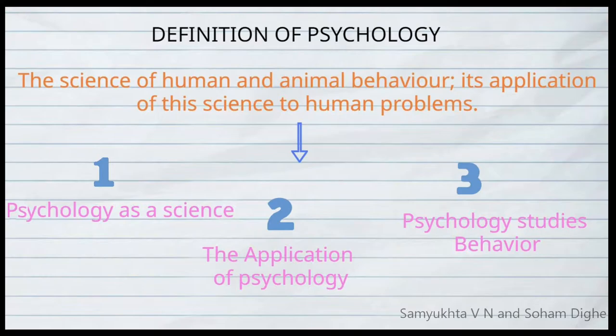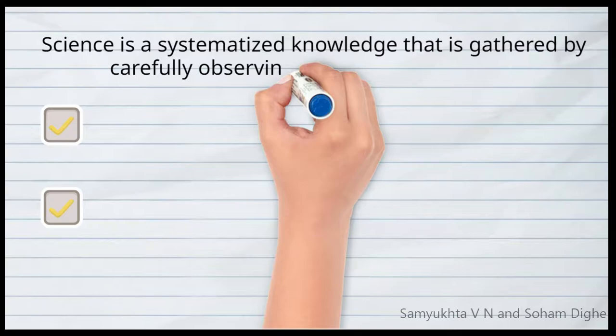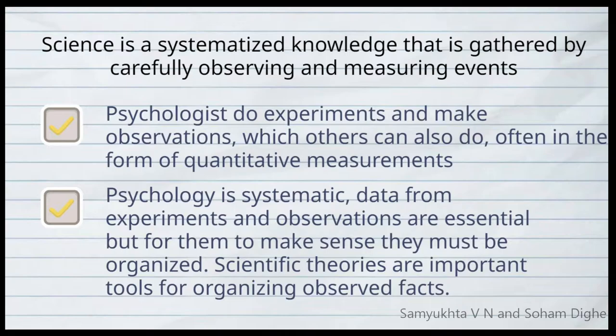Let's discuss each part. First, psychology as a science. Science is systematized knowledge gathered by carefully observing and measuring events. Psychologists do experiments and make observations which others can also replicate, often in the form of quantitative measurements. Data from experiments and observations are essential, but they must be organized to make sense.